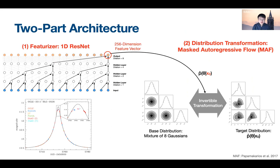Here is a schematic illustration of our inference architecture. A featurizer network processes the light curve into a 256-dimensional feature vector that captures the necessary information. The feature vector then parameterizes a neural density estimator called a masked autoregressive flow, or MAF.